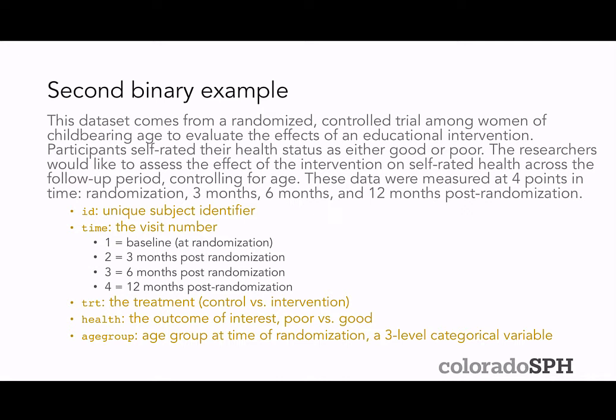A second binary data example comes from a randomized controlled trial among women of childbearing age evaluating the effects of an educational intervention. Participants self-rated their health as either good or poor — the binary outcome. Researchers want to assess the effect of the intervention on self-rated health across the follow-up period, controlling for age. Data were measured at four time points: randomization, three months, six months, and 12 months after randomization.